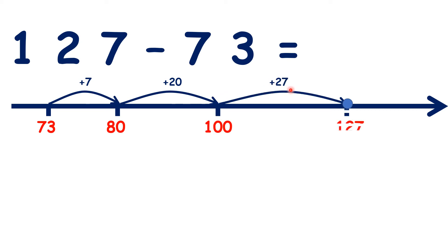So we need to work out 7 plus 20 plus 27. But we might find it easier to do 27 plus 7 plus 20. So we can do 34 plus 20, because 27 plus 7 is 34. Now, 34 plus 20 is 54, so that's our answer.